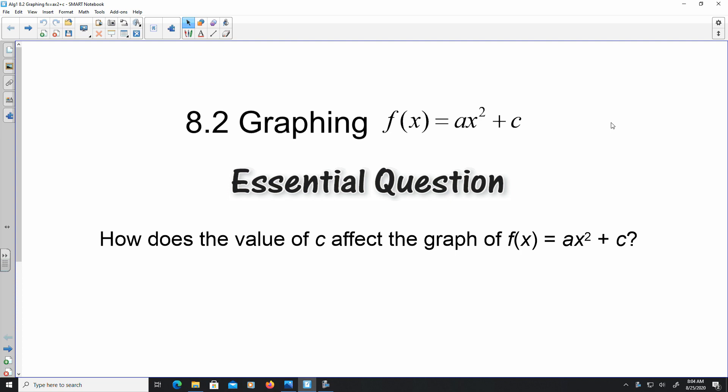In this lesson, we're going to figure out how the value of c affects the graph of this function f(x) = ax² + c. So in 8.1, we looked at f(x) = ax². Now, all of those graphs, in this function, in this setup, the vertex was located at the origin (0, 0).